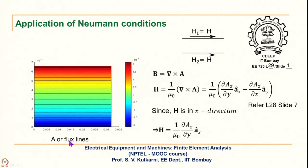These are equi-A or equi-flux contours. As mentioned in previous lectures, lines and contours are used interchangeably in electromagnetic and FE analysis. A is varying with respect to y because the colors are changing, as you can easily see. H_x is imposed and then, by solving the diffusion equation, H_x reduces as you go inside, and correspondingly ∂A_z/∂y also changes as you go inside from both surfaces toward the center.